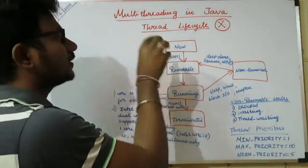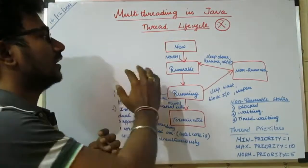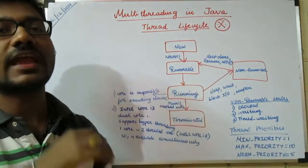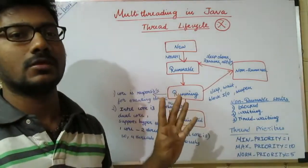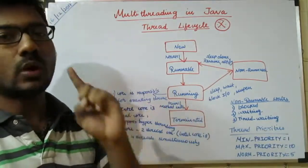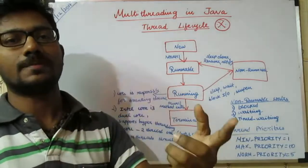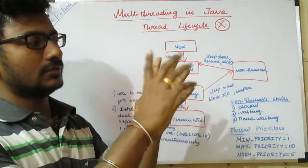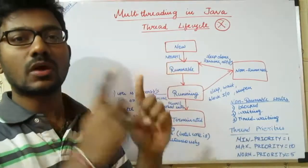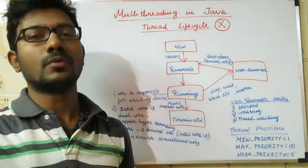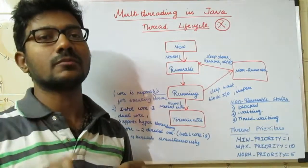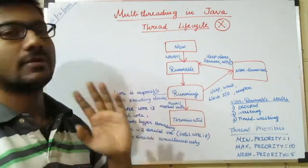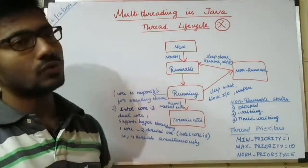Four threads in second state is runnable. Runnable means that the four threads are executed — they are alive. This is a real-time case. If you are a father, your mother, your brother, you will be able to drive a bike. That's a real-time case.